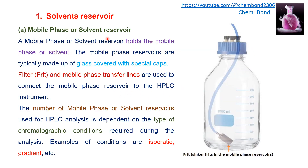The mobile phase or solvent reservoir holds the mobile phase or solvent. The reservoirs are typically made up of glass that is covered with special caps. There are two other components of the mobile phase reservoir: the filter or frit, and mobile phase transfer lines. The filter or frit will filter out any dust or particulate particles if they are present in the mobile phase.